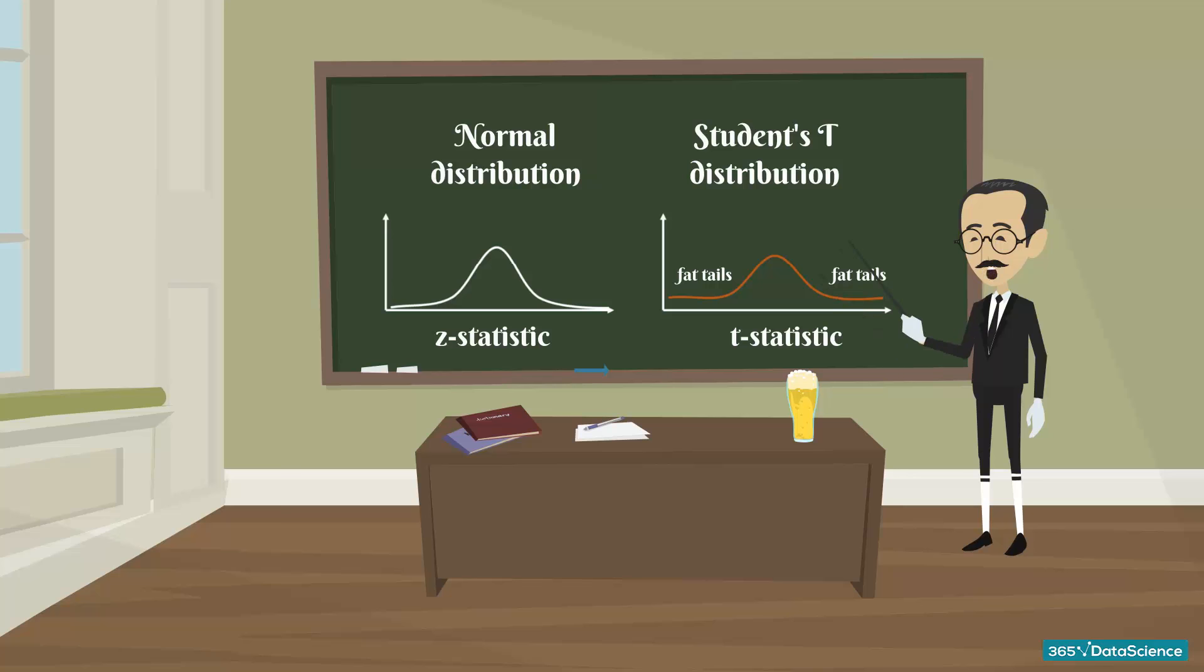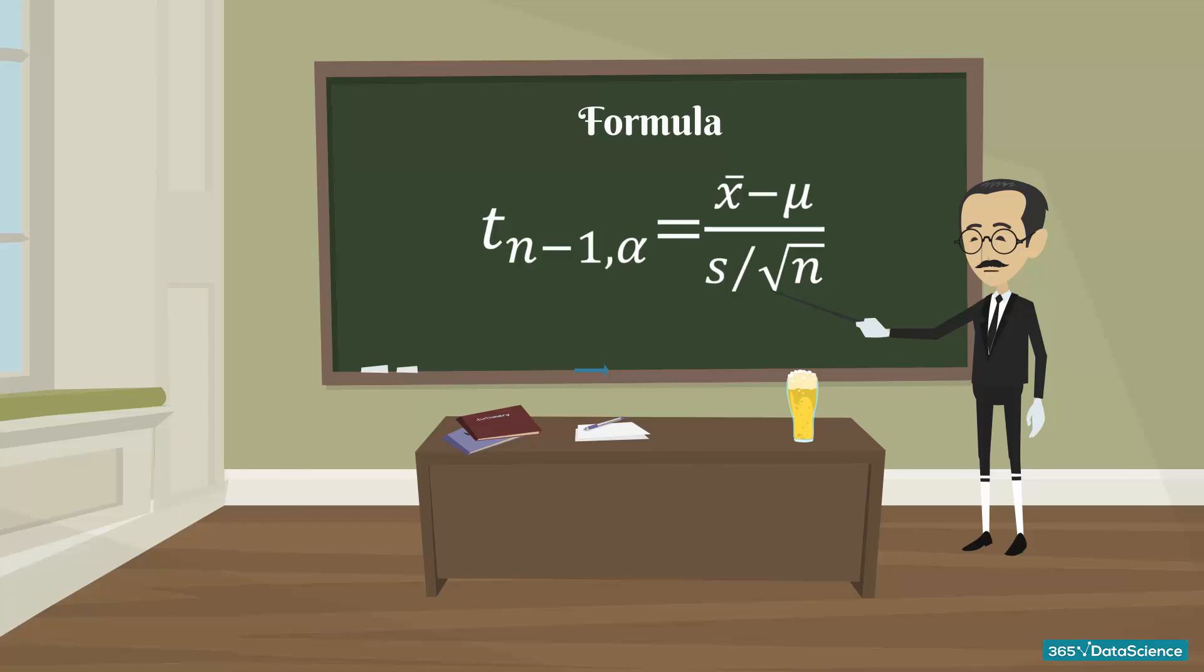The formula that allows us to calculate it is t with n minus 1 degrees of freedom and a significance level of alpha equals the sample mean minus the population mean divided by the standard error of the sample.